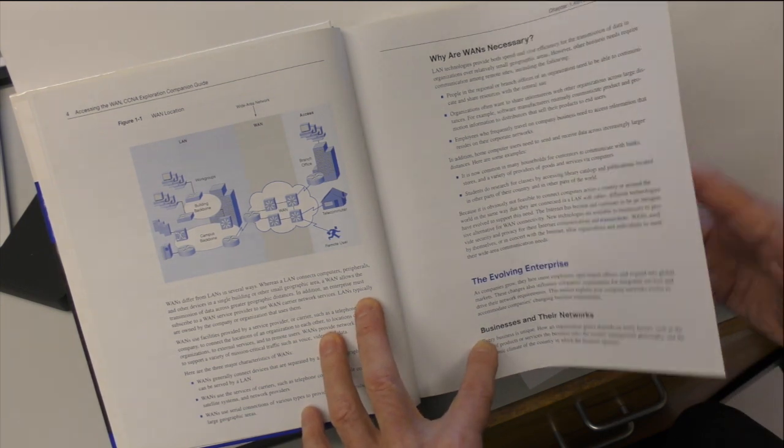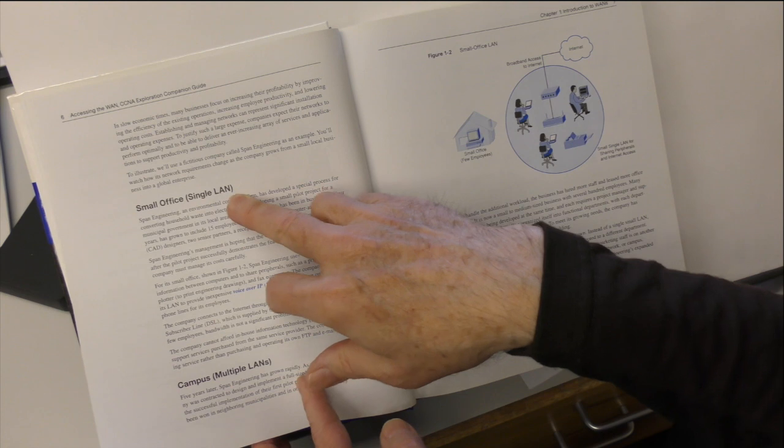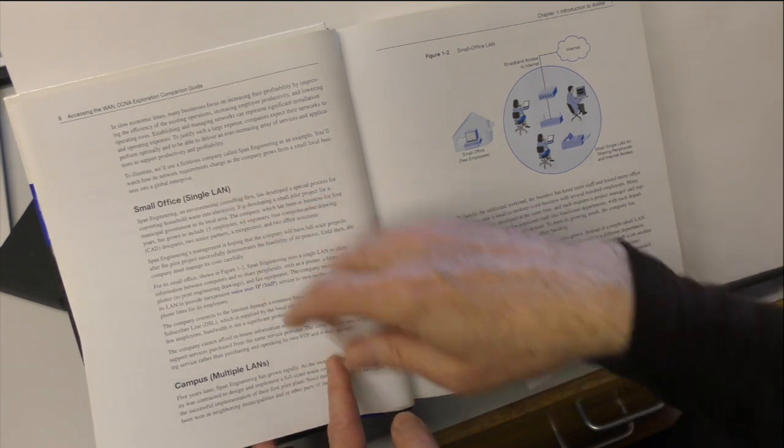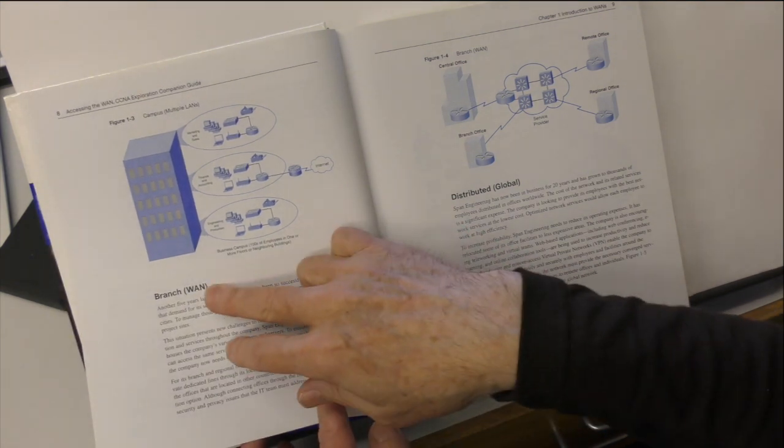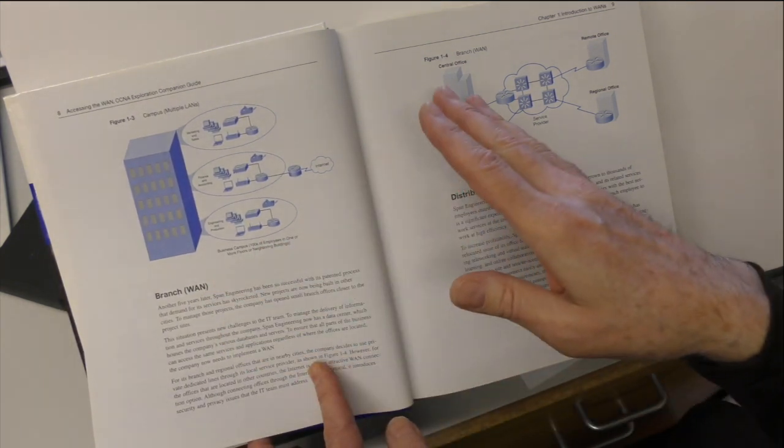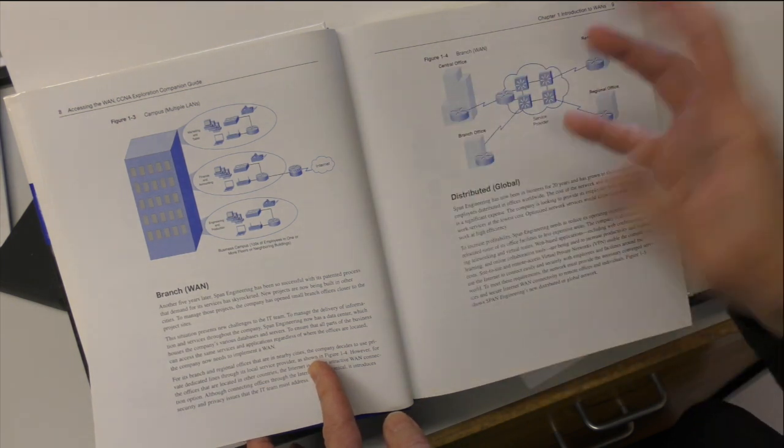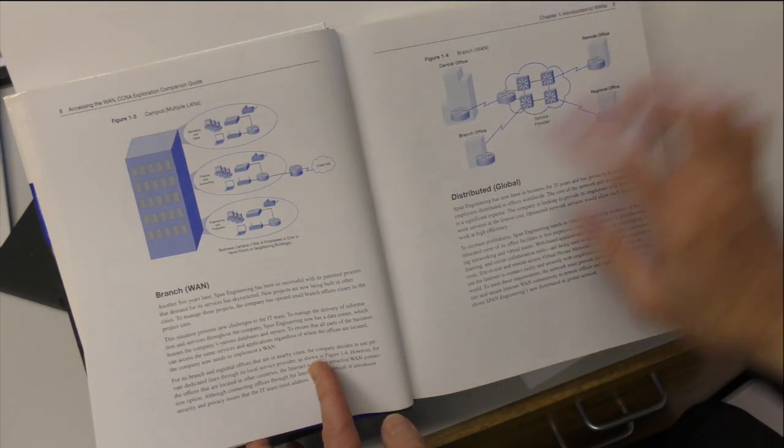Why are WANs necessary? So you're getting an overview of what's in the chapter and how it progresses. The evolving enterprises, something about businesses, small office, single LANs, campus, multiple LANs and branch, WANs. So you already know there's something about small networks building up into bigger networks.